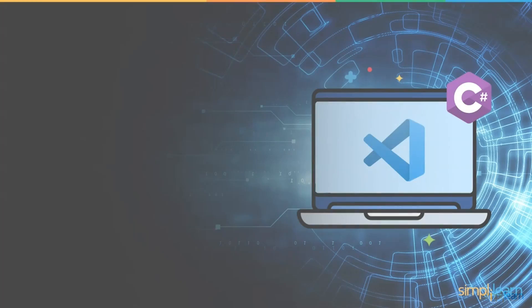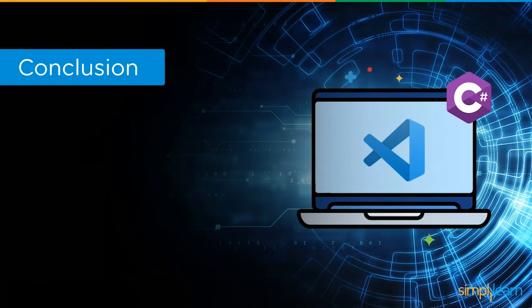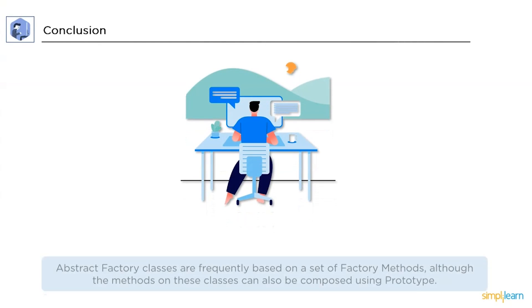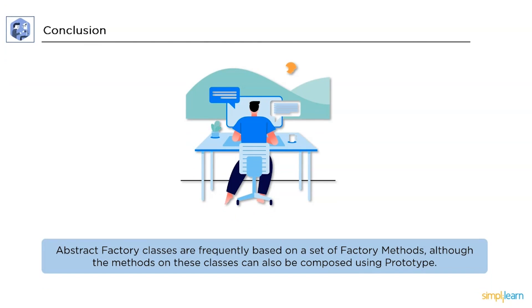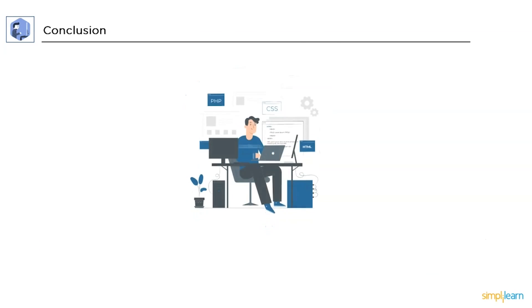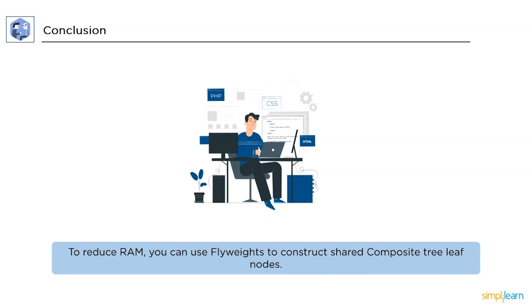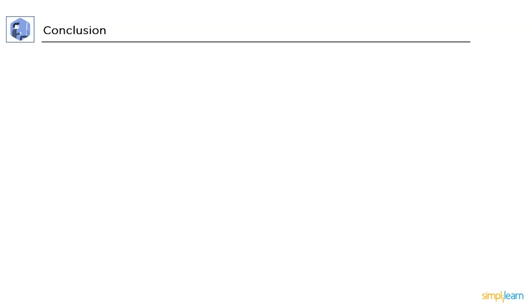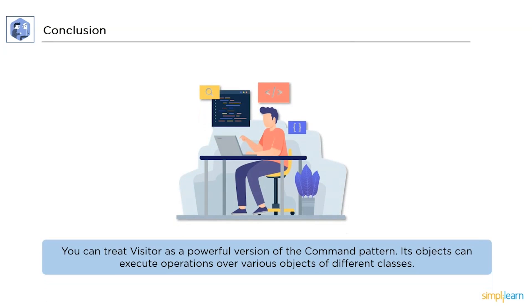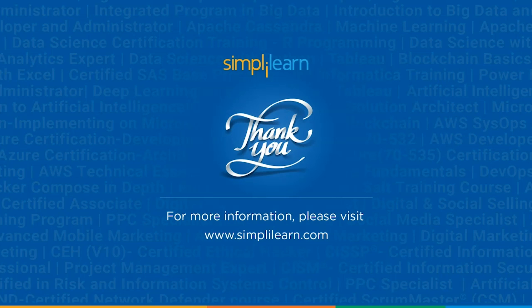To conclude, here are some advantages of design patterns. Abstract factory classes are frequently based on a set of factory methods, although the methods on these classes can also be composed using prototype. To reduce RAM, we can use flyweights to construct shared composite tree leaf nodes. Finally, you can treat a Visitor as a powerful version of the Command pattern — its objects can execute operations over various objects of different classes. And this was all for today's session.